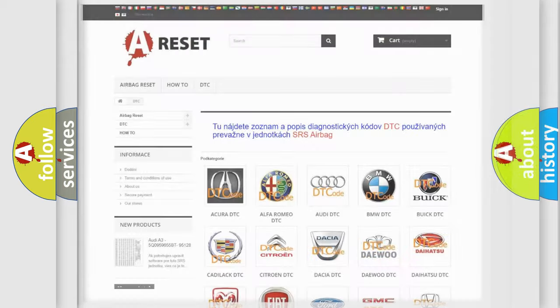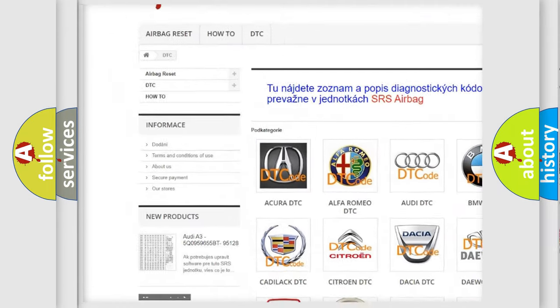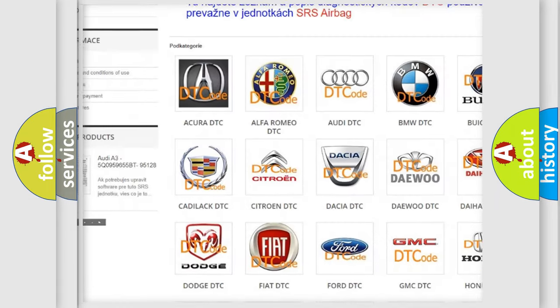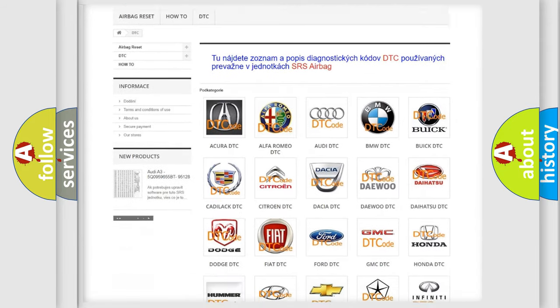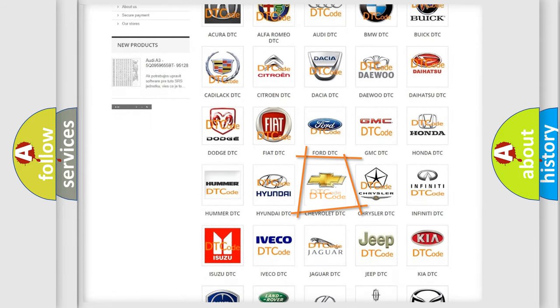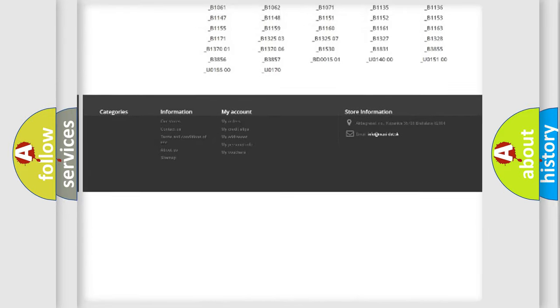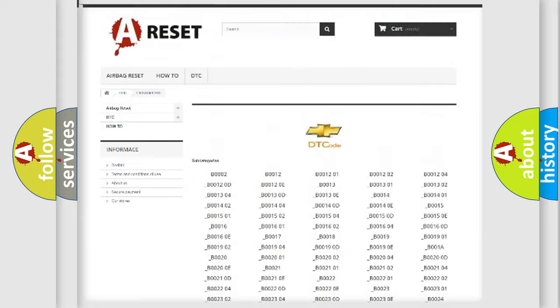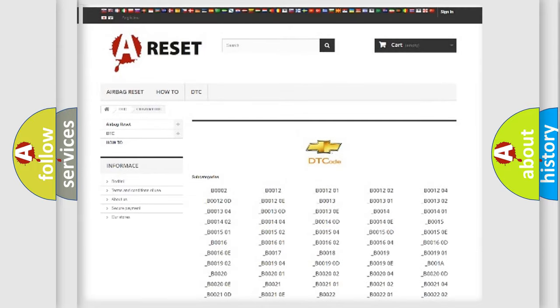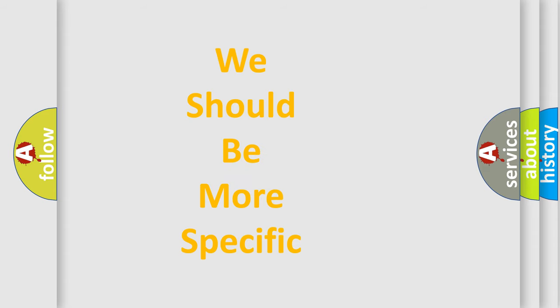Our website airbagreset.sk produces useful videos for you. You do not have to go through the OBD2 protocol anymore to know how to troubleshoot any car breakdown. You will find all the diagnostic codes that can be diagnosed in Chevrolet vehicles, also many other useful things. The following demonstration will help you look into the world of software for car control units.